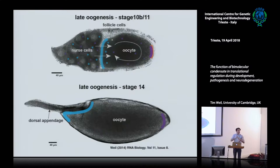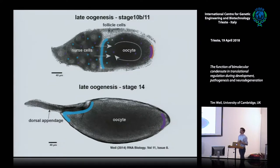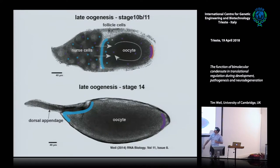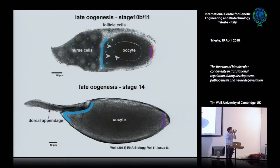In later oogenesis, two dramatic events occur. The nurse cells undergo programmed cell death, and all their cytoplasm is pushed into the oocyte in an actin-dependent event called nurse cell dumping. Simultaneously, the oocyte starts to mix like a washing machine — a microtubule-driven event called streaming. By the end of oogenesis, we're left with a larger egg with localized components at the posterior and anterior, plus the dorsal appendages, which are breathing tubes. Misformed appendages can indicate patterning defects.